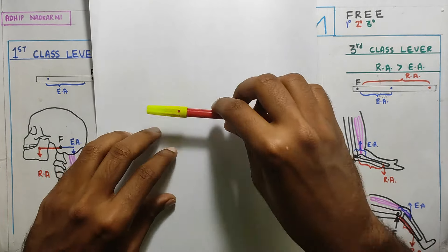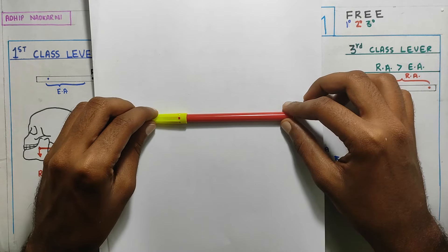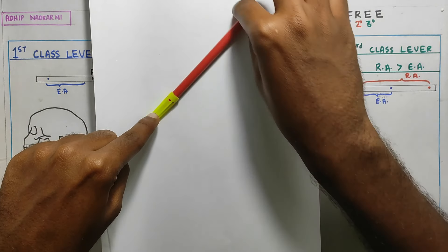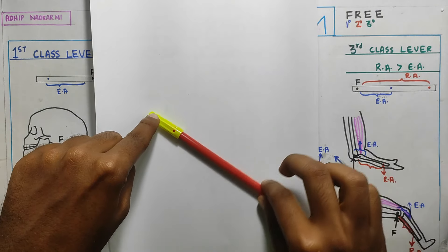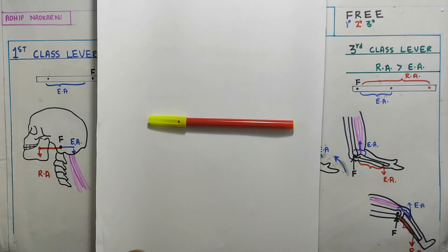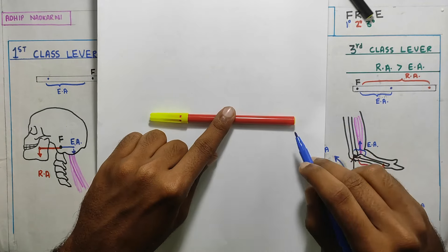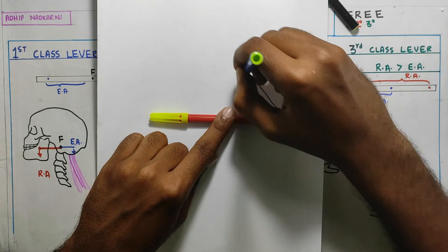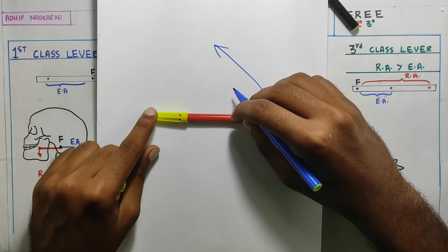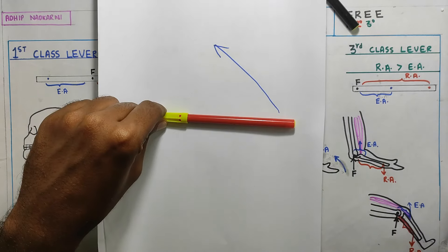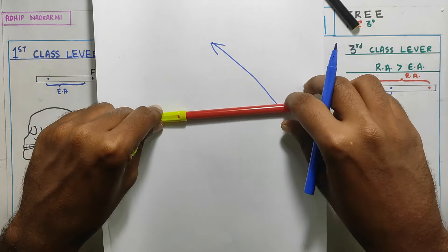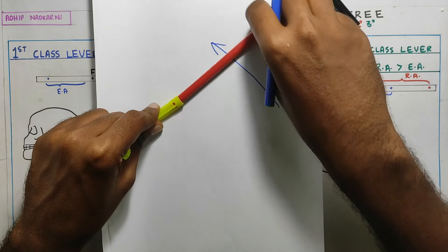To understand a lever, first we need a lever that is a rigid body. Then we need a fixed point — that is the fulcrum — around which this body moves, and then we need forces. If I apply a force to this body in a direction with a fixed point, the body will move around that point.